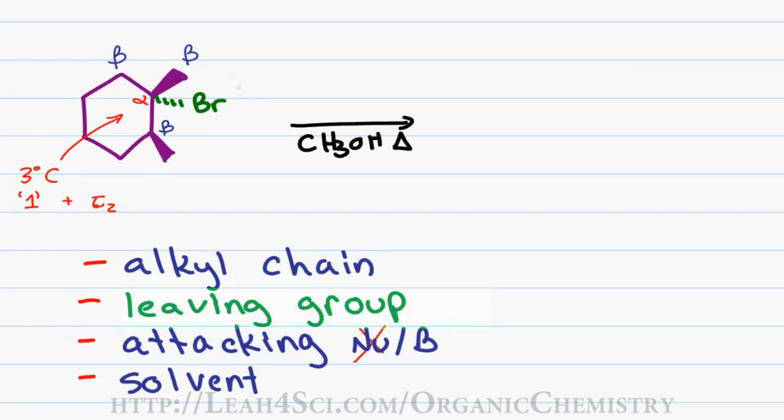Next we look at the leaving group which is bromine. Since it forms a stable bromide in solution, this is considered a good leaving group, but it doesn't tell me which type of reaction can take place.